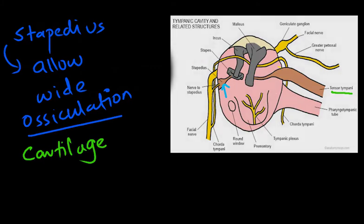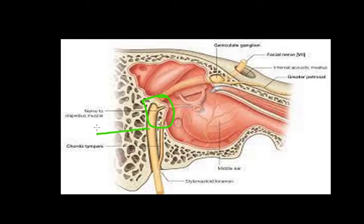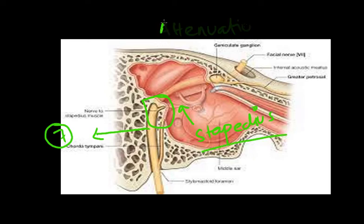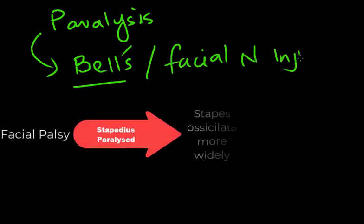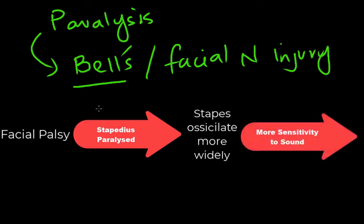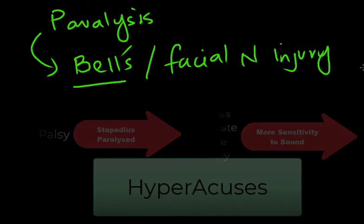The stapedius is supplied by the facial nerve — the 7th nerve — via the nerve to the stapedius, which is responsible for the attenuation reflex. When this reflex is paralyzed, such as due to Bell's palsy or any facial nerve injury, the stapedius muscle becomes very sensitive and cannot control stapes movement, resulting in more sensitivity to sound. This condition is known as hyperacusis.